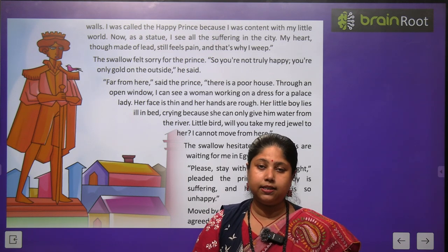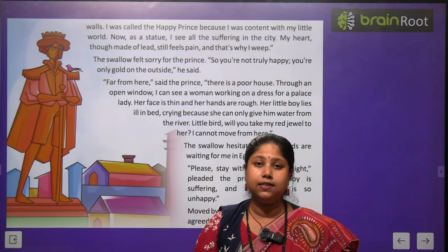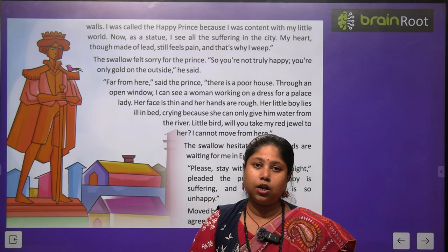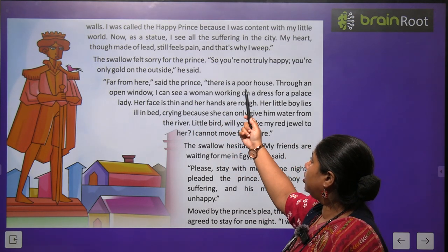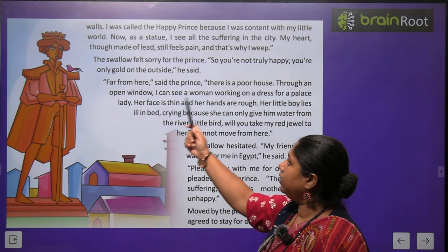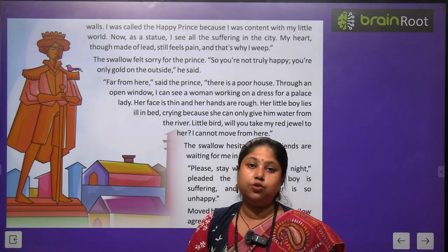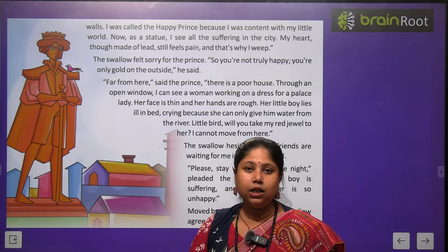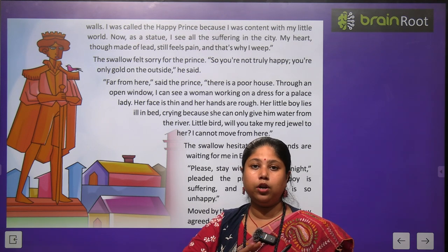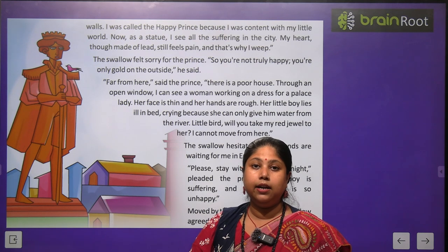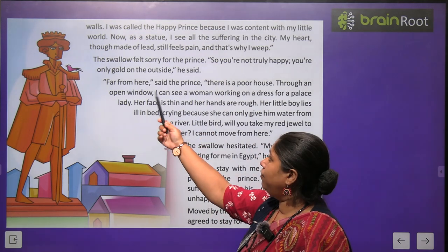'I was called the Happy Prince because I was content with my little world. Now, as a statue, I see all the suffering in this city. My heart, though made of lead, still feels pain — and that's why I weep.' Mere marne ke baad jab mera statue shahar ke beechon beech lagaya gaya, ab yahan se khade hokar main poora shahar dekh sakta hun, aur mujhe kai jagahon par dukh aur dard dikhta hai. The swallow said, 'You are not truly happy — you are only gold on the outside.'